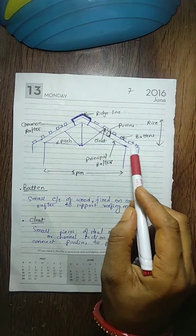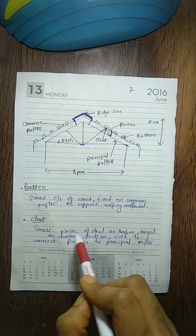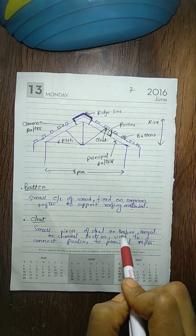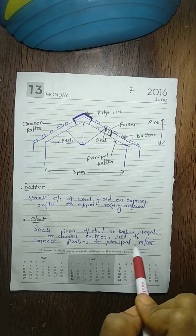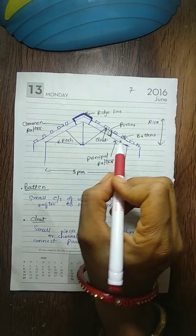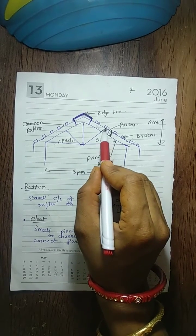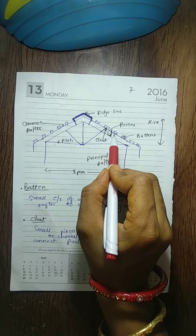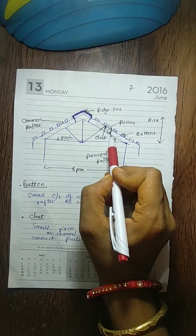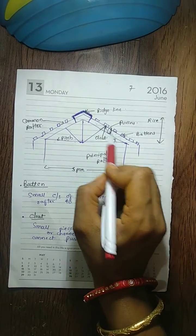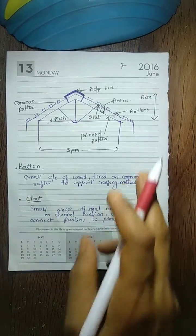Cleat is a small piece of steel or timber angle or channel section used to connect the perlin to the principal rafter. In this diagram the cleats are here, and this is the perlin. Cleats are the angle or channel which support the perlin or connect the perlin to the principal rafter.